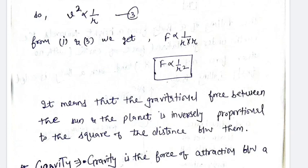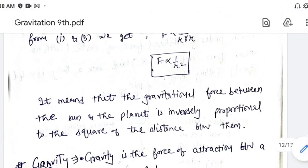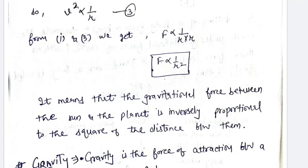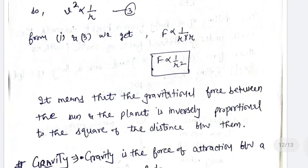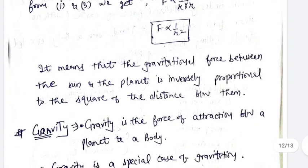And अगर हमने Newton का inverse law prove किया, तो हम यह prove कर पाए with the help of the gravitational law and Kepler's law. अगर Kepler ने third law नहीं दिया होता, तो बिना उसकी help के हम इस law को prove नहीं कर पाते. So it was Kepler's third law of planetary motion which gave an idea to Newton to formulate the universal law of gravitation.